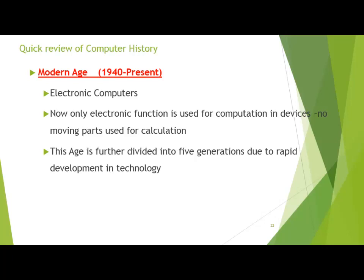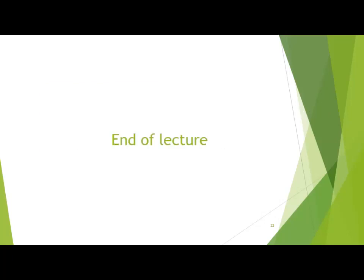In the next few slides we will see the details of each age — Dark Age, Middle Age, and Modern Age — and within the Modern Age we will see each generation, which devices came, and how efficient computers became. Initially, computers performed only one task — calculation — but today's computer performs many, many tasks. This is the end of the lecture, thank you so much.